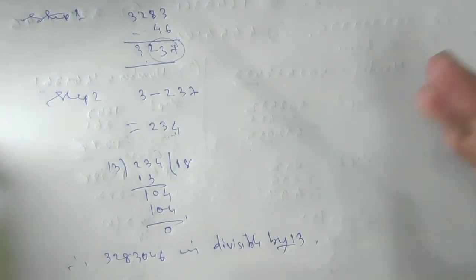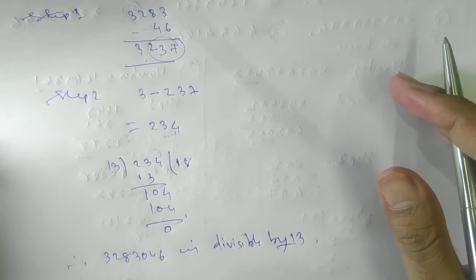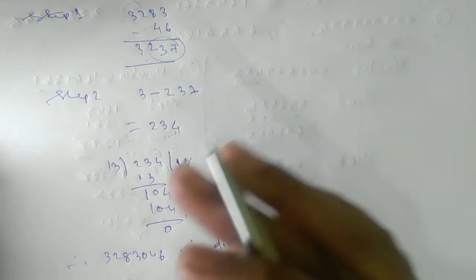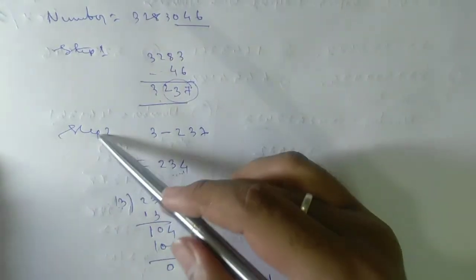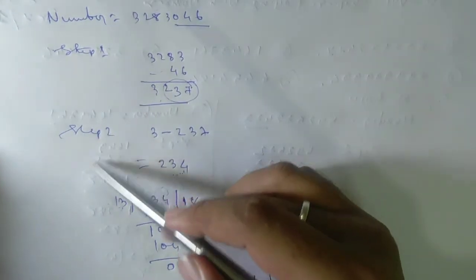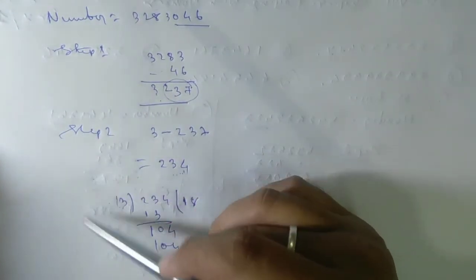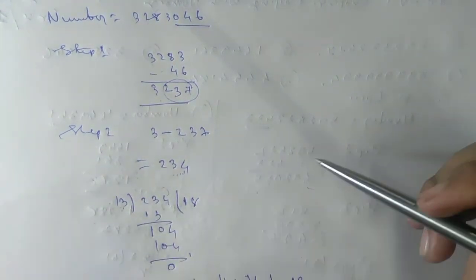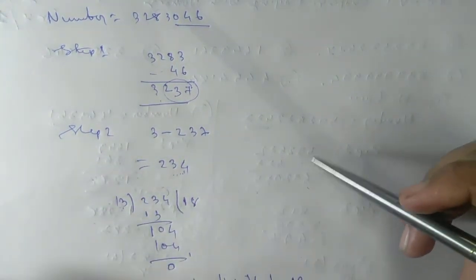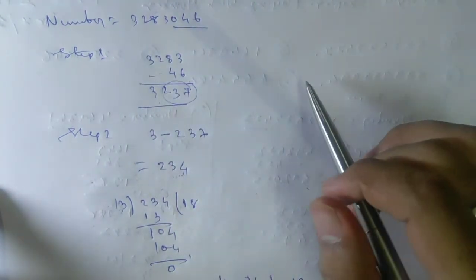So any bigger number — whether it is a 10-digit or 11-digit number — you can proceed in this same way. It may not take just 2 steps; it may take 3, 4, or 5 steps depending on the number of digits you are checking.